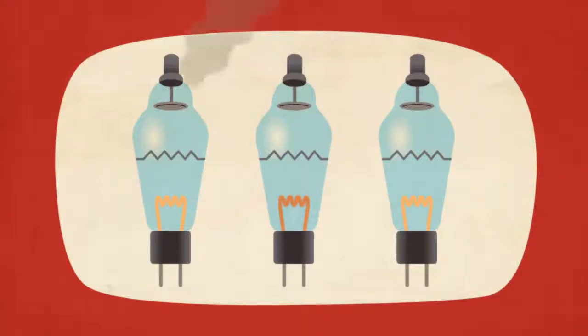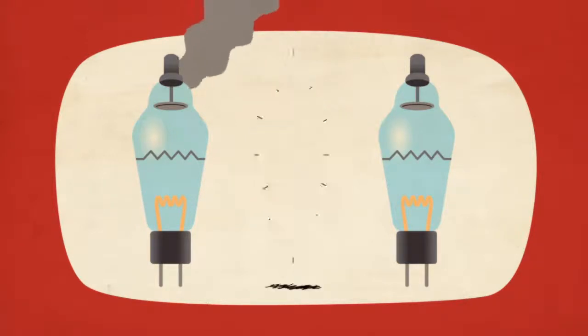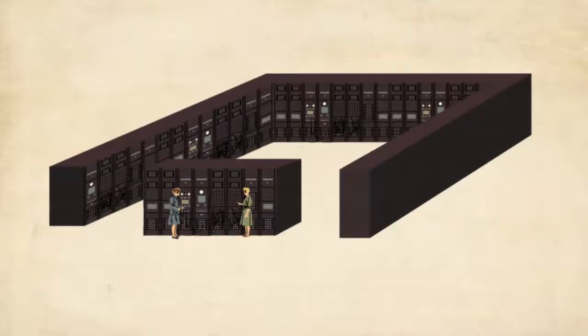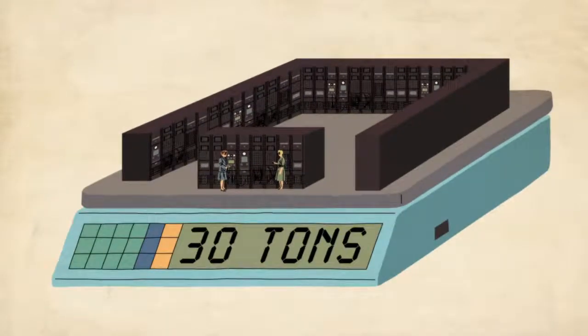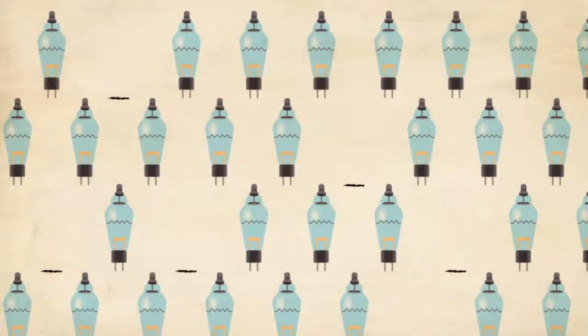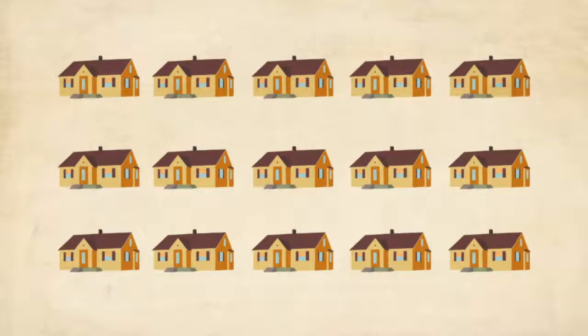But despite these advancements, vacuum tubes were unreliable and bulky. With 18,000 triodes, ENIAC was nearly the size of a tennis court and weighed 30 tons. Tubes failed every other day, and in one hour, it consumed the amount of electricity used by 15 homes in a day.